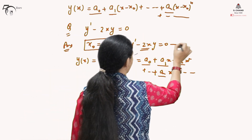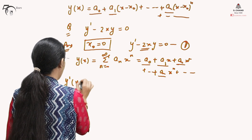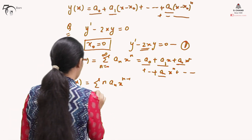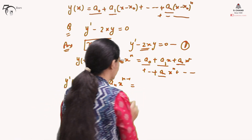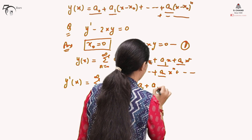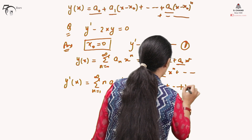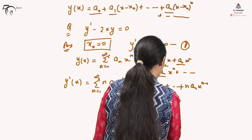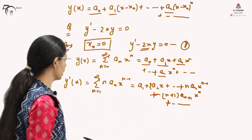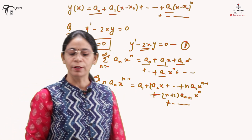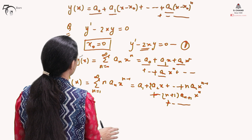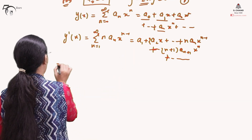To substitute into the differential equation we need to differentiate y. So y'(x) = sigma (n from 1 to infinity) of n·a_n·x^(n-1). We have to be extra cautious that here n starts from 1, because the a_0 term does not involve any x and becomes 0 when differentiated. This will be: a_1 + 2a_2·x + ... + n·a_n·x^(n-1) + and so on, and we can also write (n+1)·a_{n+1}·x^n.